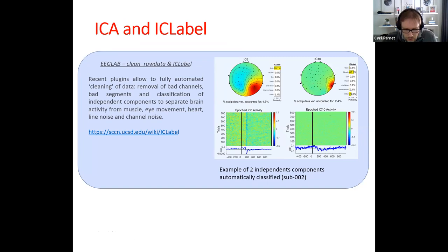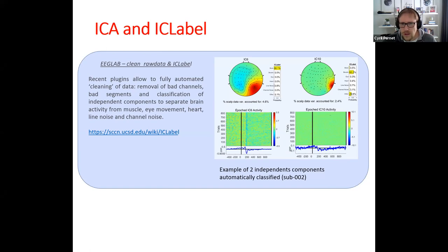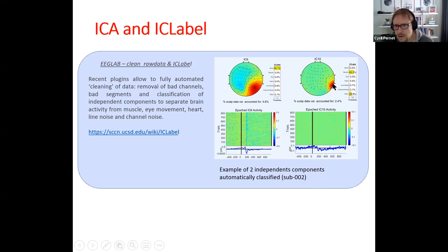The IC Label algorithm has been trained on components labeled by experts — people who've been in EEG for decades — and then trained. Here is an example from one subject using data from Wakeman and Henson: a face processing dataset where you present familiar, unfamiliar, and scrambled faces and ask if they are different. We can see, for instance, IC6 and IC10 — both with somewhat right-lateralized components. IC6 is labeled 99% brain, whereas IC10 is mostly muscles and other artifacts.